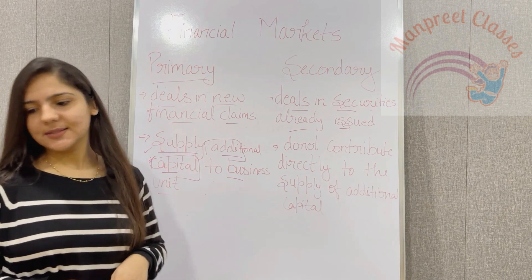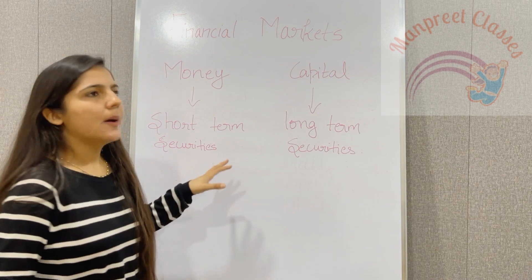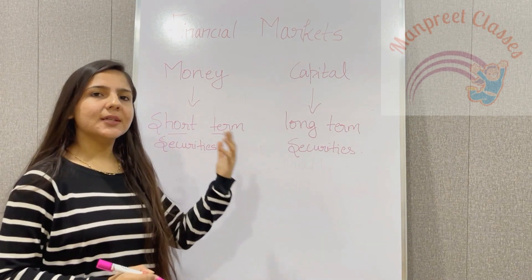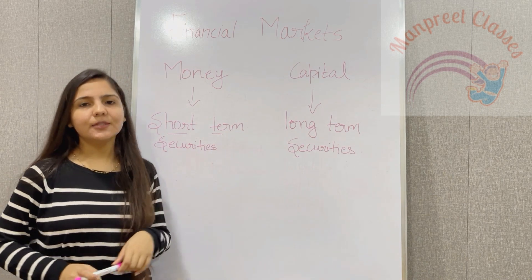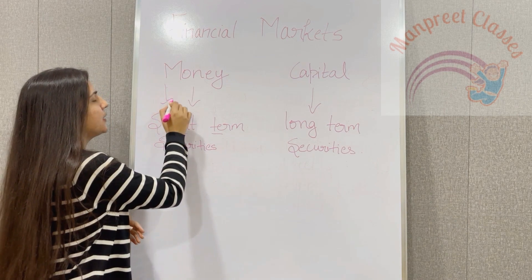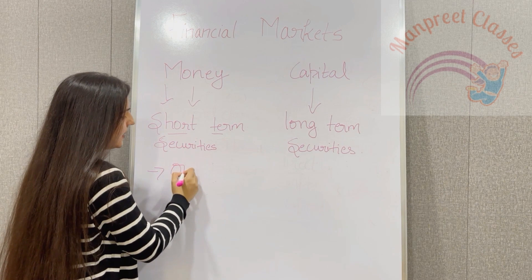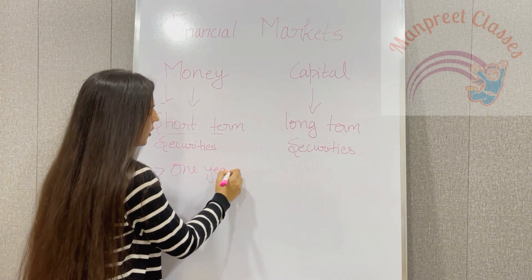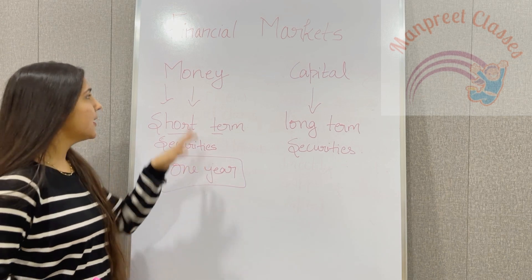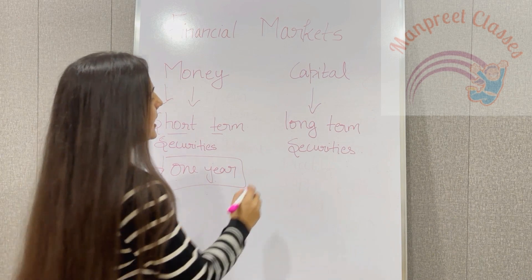Now let's study about money market and capital market — the next type. Money market deals with securities that are for the short term, while capital market deals with the long term. In the money market, those securities are included which have a maturity period of under one year — that is, all securities that will be matured within the time span of one year.